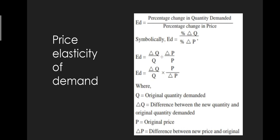Elaborating the formula further: Ed = (ΔQ / Q) × (P / ΔP), where Q refers to original quantity demanded, ΔQ is the difference between the new quantity and original quantity demanded, P refers to original price, and ΔP refers to the difference between new price and original price. This formula is used to calculate price elasticity of demand.